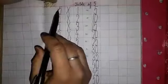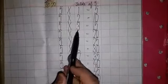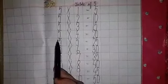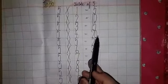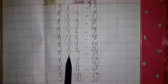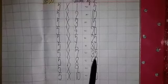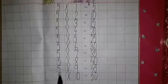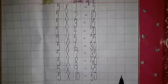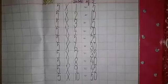Five one jump five. Five two jump ten. Five three jump fifteen. Five four jump twenty. Five five jump twenty five. Five six jump thirty. Five seven jump thirty five. Five eight jump forty. Five nine jump forty five. Five ten jump fifty.